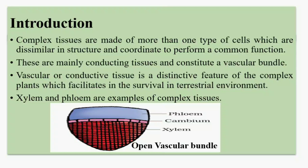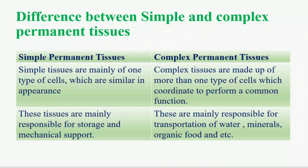Now the difference between simple and complex permanent tissue. In simple permanent tissue, similar types of cell structures are present and they combine to perform basic functions like storage and providing mechanical support. In complex permanent tissues, different types of cell structures are present and they perform a common function like conduction of water, minerals, and organic food.